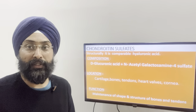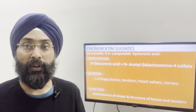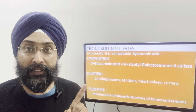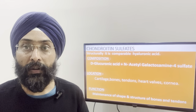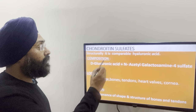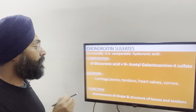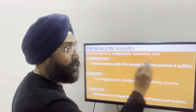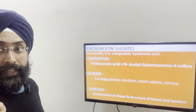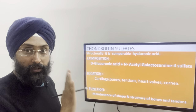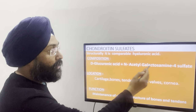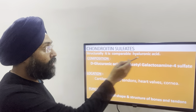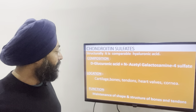The second mucopolysaccharide is chondroitin sulfate — C in the code HCHDK. It is structurally similar to hyaluronic acid, but the composition is D-glucuronic acid and N-acetyl galactosamine. So in hyaluronic acid we had N-acetyl glucosamine, but here it is a galactose derivative, not a glucose derivative. This is the difference between hyaluronic acid and chondroitin sulfate. Its location — it is found in cartilage, bones, tendons, heart valves, and cornea. Its function is maintaining the shape and structure of bones and tendons.